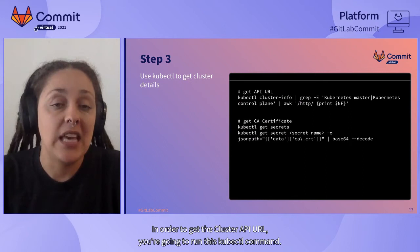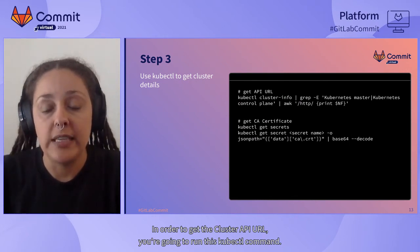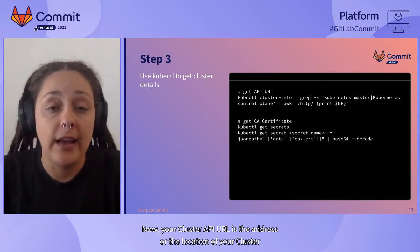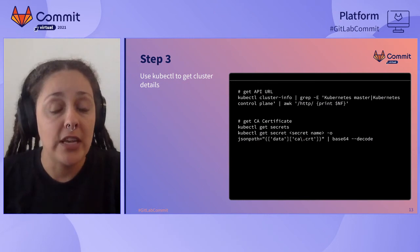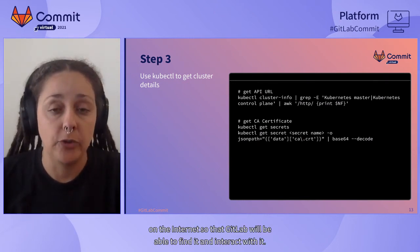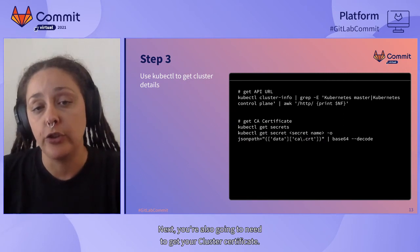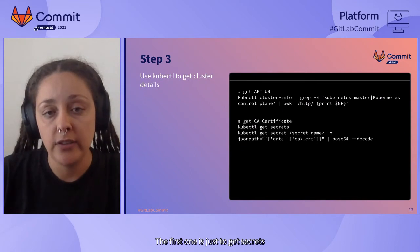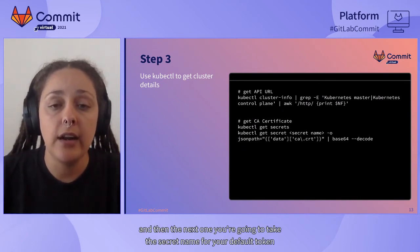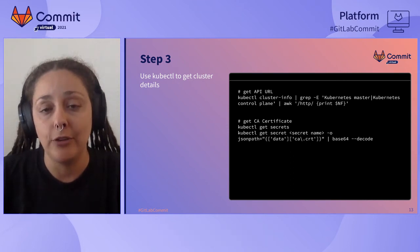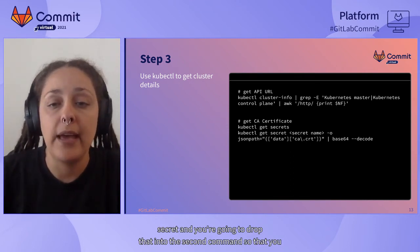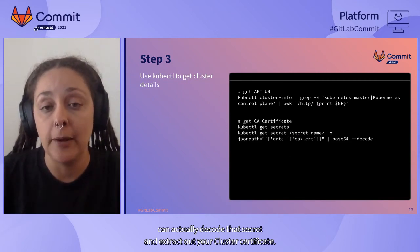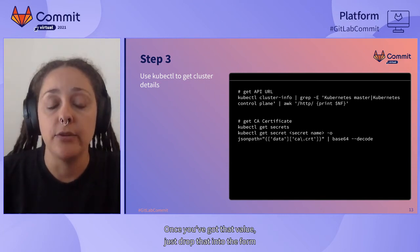To get the cluster API URL, you're going to run the kubectl command shown here. Your cluster API URL is the address or location of your cluster on the internet so that GitLab will be able to find and interact with it. You're also going to need to get your cluster certificate. There are two commands to run: the first one is just to get secrets, and then you take the secret name for your default token secret and drop it into the second command to decode that secret and extract your cluster certificate. Once you've got that value, drop it into the form on GitLab.